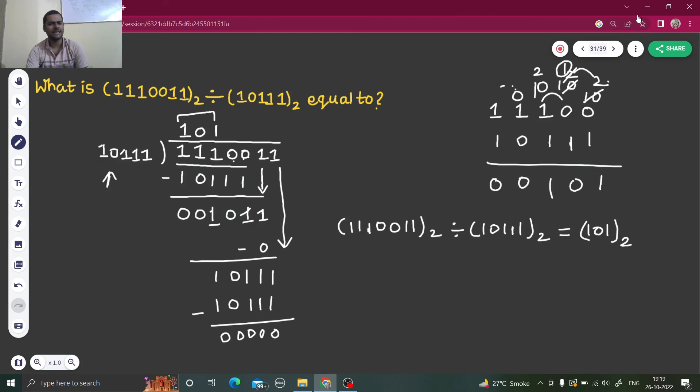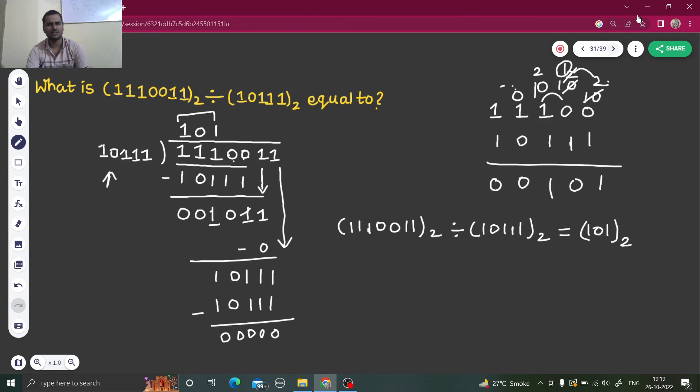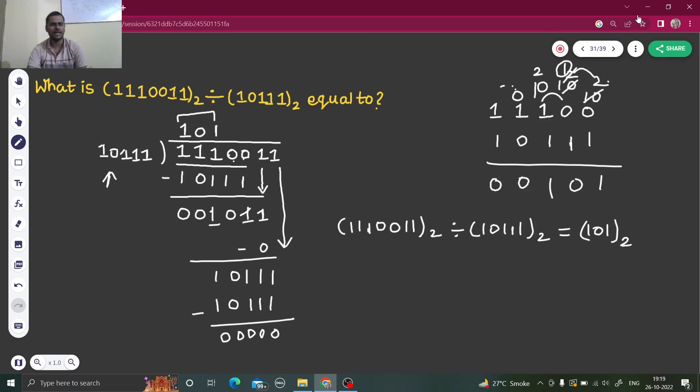So that's it. I think this was not a hard task to do as far as division is concerned. So we have covered addition of two binary numbers, we have covered subtraction of two binary numbers, we have also covered multiplication of two binary numbers and now the division of two binary numbers.